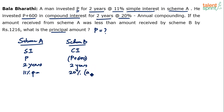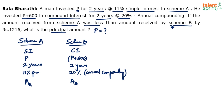This is annual compounding — regular compound interest. There is some amount received in Scheme A (let's call it AA) and amount received in Scheme B (AB). The amount received in Scheme A was less than Scheme B by 12.16, so the equation is: AA = AB minus 12.16.